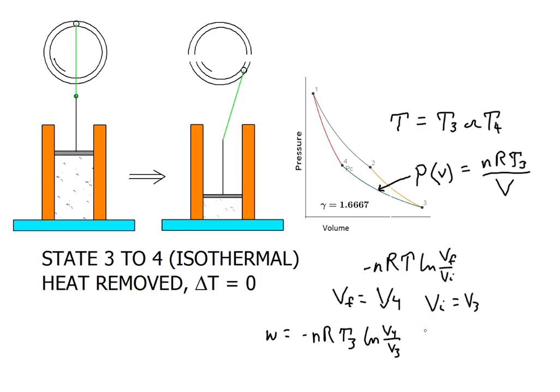Now since V4 is less than V3, we have a compression. That means that the log is going to be negative, and the work, because a negative of a negative is positive, the work is going to be positive.